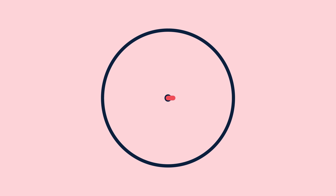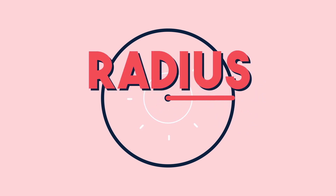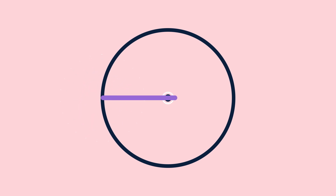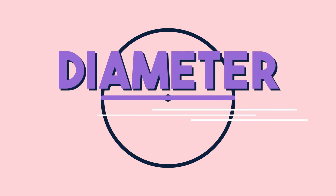The distance from the middle to the edge is the radius. From one edge to the other is the diameter.